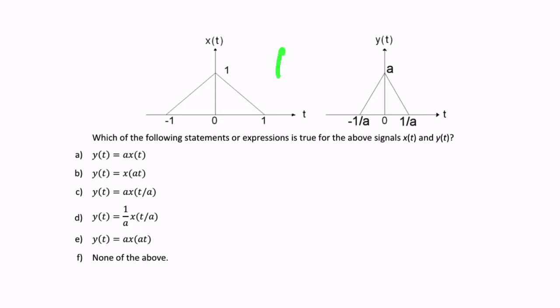So, scaling in the y direction is simply a multiplication. So, you would say something like y of t equals scaling factor multiplied by x of t. That will result in a scaling in the vertical direction by a factor of a. So, if a was 5, x of t, we multiplied by 5.